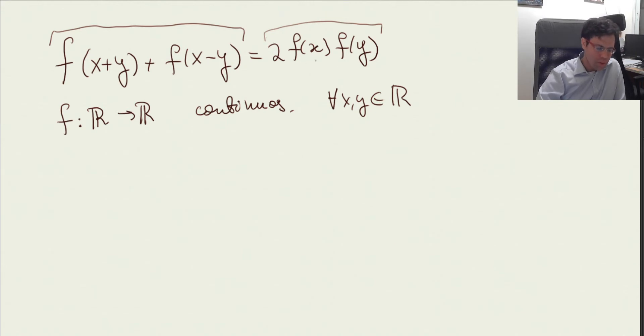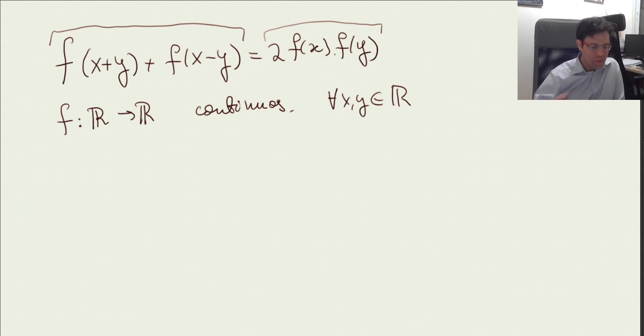Basically it's looking for a solution to a wave equation in the form of separation of variables. This f is a very special form because it's the same function for both x and y, so it's a very special case.